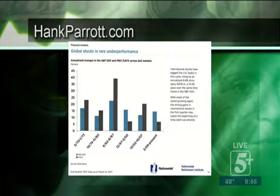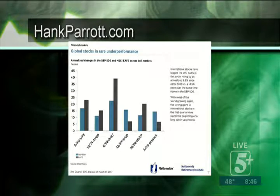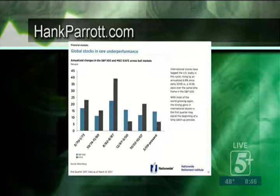Looking at global stocks and rare underperformance: historically, the blue line represents the S&P 500 index and the dark gray represents the Euro Asia Far East index. International stocks have normally outperformed U.S. stocks during various bull market cycles, going back to the early 1970s through 1980, then 1982 through 1987, and beyond. However, from 1987 to 2000 and from 2009 to the present, internationals have lagged.